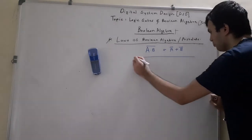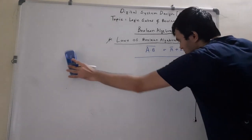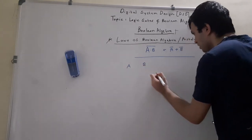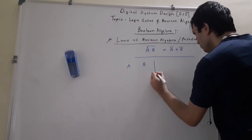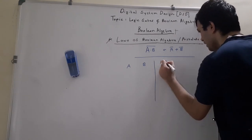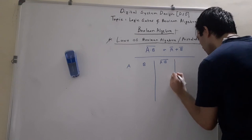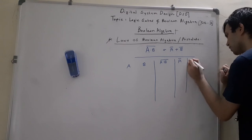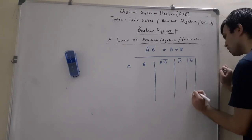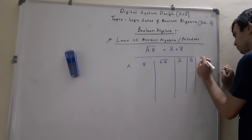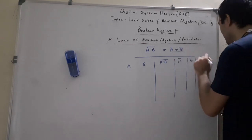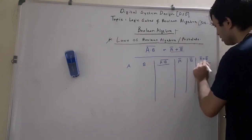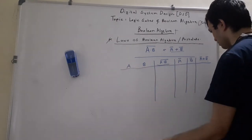To prove this, we want to show LHS equals RHS. With two inputs there are four different input combinations. Our truth table columns are: A, B, then the LHS which is A dot B the whole bar, then Ā, then B̄, and finally the RHS which is Ā plus B̄.